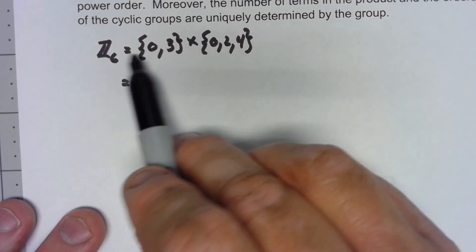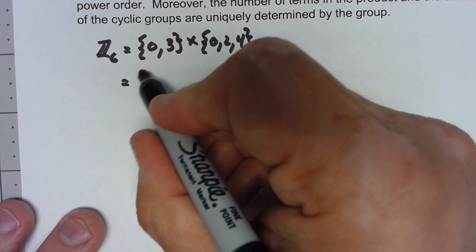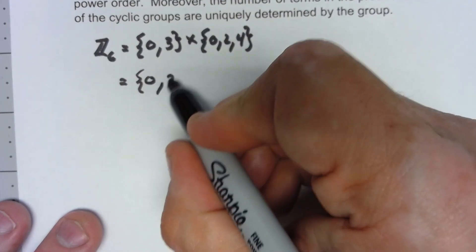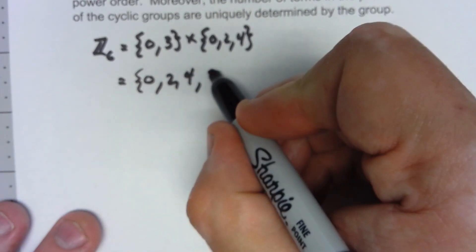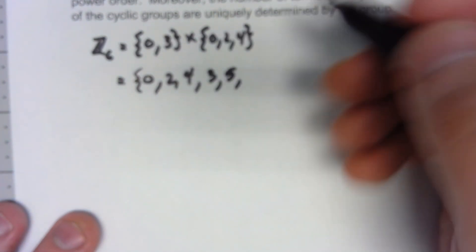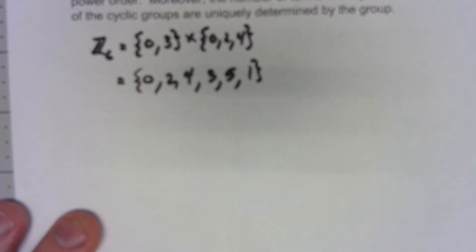Now even though we write it with that times multiplication for inner direct product, remember we're still using the operation of addition mod 6 for Z6. So 0 plus 0 is 0, 0 plus 2, 0 plus 4, 3 plus 0, 3 plus 2 is 5, 3 plus 4 is 7, mod 6 is 1. So we are getting all of Z6.